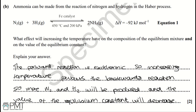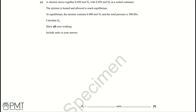The reason Kc decreases is because Kc = [NH₃]² / ([N₂][H₂]³). If N₂ and H₂ are increasing, the value of NH₃ will be decreasing, so Kc will also decrease. You get one mark for stating the forward reaction is exothermic so increasing temperature favours the backwards reaction, and a second mark for saying more N₂ and H₂ are produced so Kc decreases.